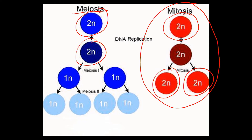Meiosis is a different story: cells start off diploid but when they undergo meiosis the two cells formed are n, or haploid. So the chromosome number in meiosis one is halved. The second division in meiosis is simply to separate the two chromatids from each other.